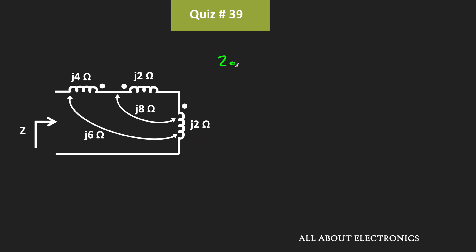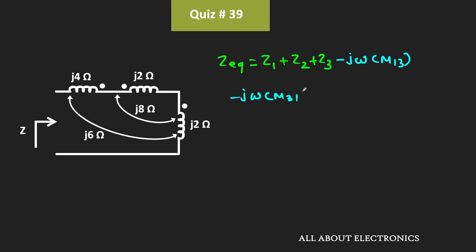So the equivalent impedance Z_equivalent can be given as Z1 plus Z2 plus Z3, minus j·ω·M13, minus j·ω·M31, plus j·ω·M23, plus j·ω·M32. This is because mutual inductance M13 and M31 will be subtractive, while the mutual inductance between coil number 2 and coil number 3 will be additive.